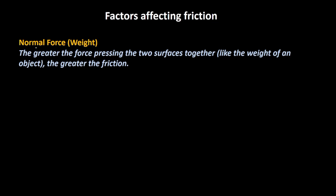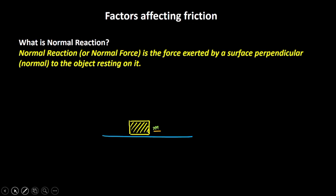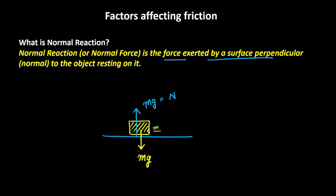Now let's understand the second factor: normal force. First, let's understand what normal force means. Imagine a box of mass M lying on a surface. There is a force of gravity pulling the box downwards, given by M times G. The surface applies an equal and opposite force, also equal to Mg. This is called the normal reaction — the force exerted by a surface, perpendicular to the object resting on it. Note that the normal reaction equals Mg in this particular case, but this may not hold for all cases.